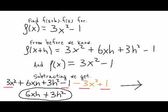Now that could be simplified further. 3x² - 3x² cancels to 0. -1 + 1, those cancel to 0. And so what we're left with is 6xh + 3h². So that 6xh + 3h² is f(x+h) - f(x) for the function we were given, 3x² - 1.